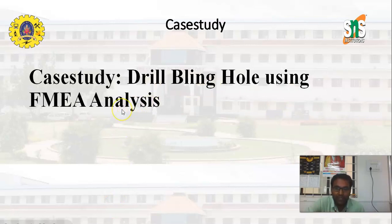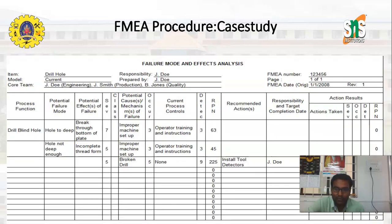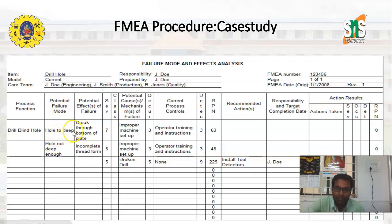We are now going to discuss the case study on drilling a blind hole using FMEA analysis. Looking at the FMEA chart, our major aim is to analyze the drill blind hole process. We determine the failure modes: first, the hole can be too deep; second, the hole is not deep enough. The potential effects are, respectively, breakthrough at the bottom of the plate, and incomplete thread form.